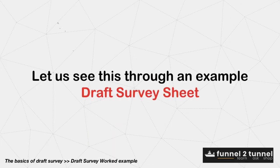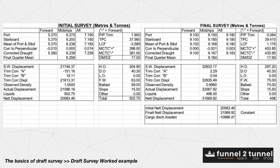Let us see this through a draft survey sheet. In the initial draft survey column, the liquids quantity of 502.70 is subtracted from the actual displacement and the net displacement is obtained. Similarly, in the final draft survey the liquids are subtracted from the actual displacement and the net displacement is obtained. The difference between both displacements gives you the cargo loaded figure. You can also see the different corrections applied in order to arrive at the actual displacements in both cases of initial and final draft survey.